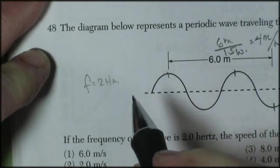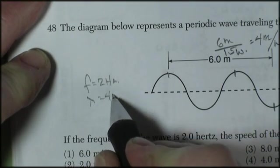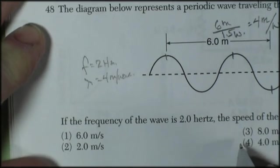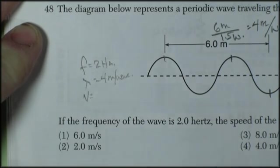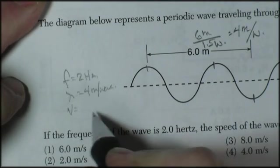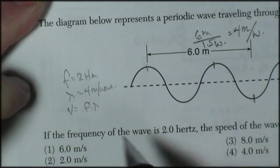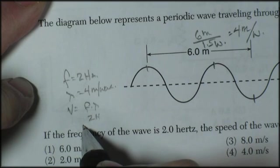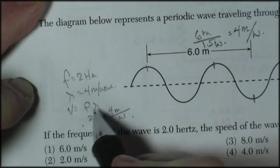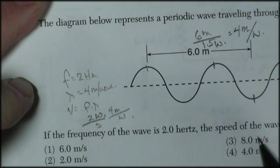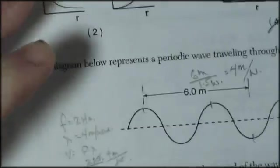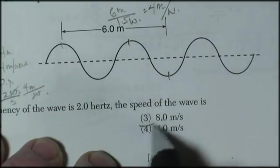So I've got frequency of 2 Hz, a wavelength of 4 meters per wave. And the speed of a wave, the velocity of a wave, is equal to velocity equals frequency times wavelength. Velocity equals frequency times wavelength, or 2 Hz times 4 meters per wave. Incidentally, 2 Hz is 2 waves per second. Waves cancel out, we're left with 8 meters per second. And that would be choice 3, 8 meters per second.